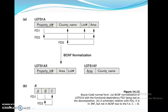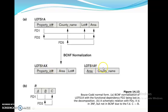Let us start with the last session which is BCNF normalization. The definition of BCNF: a schema is in BCNF normalization if it satisfies X is a super key of R. We have decomposed it into two relation slots: one AX and one AY.